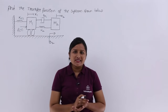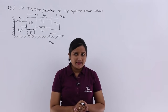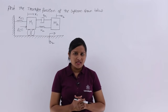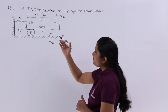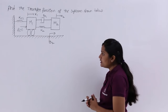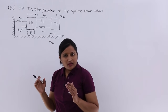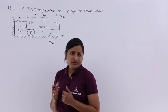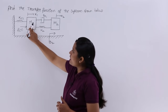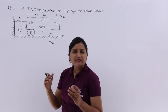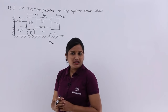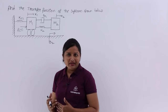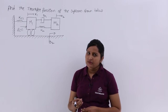In this video we are going to discuss a problem related to a mechanical translational system. They have given us to find out the transfer function of the system shown. The elements present are mass, spring, dashpot, and some friction due to the surface — all related to a mechanical translational system. This is definitely a mechanical translational system having its three basic elements: mass, dashpot, and spring.